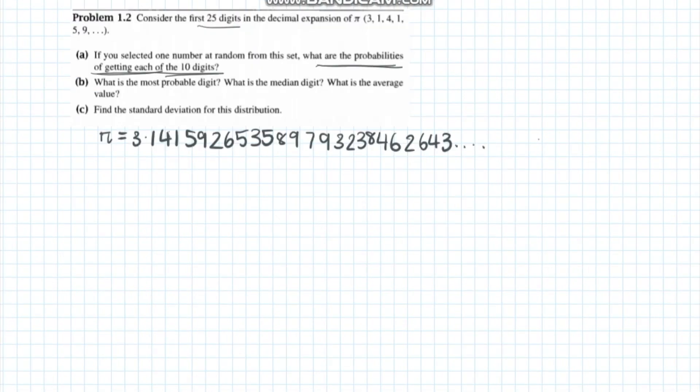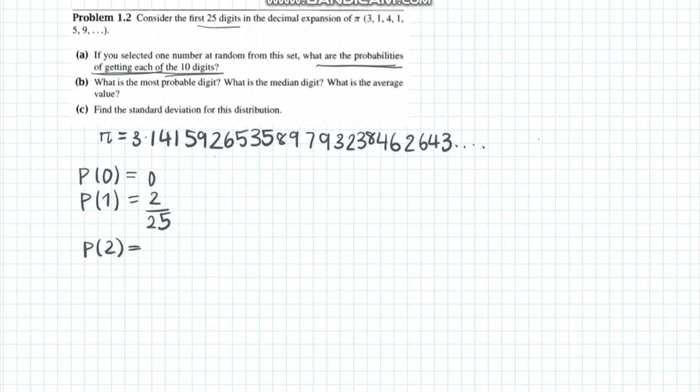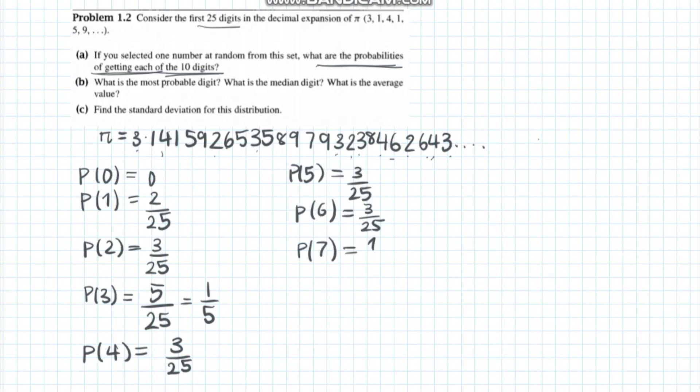Problem 1.2 asks us to consider the first 25 digits in the decimal expansion of pi, given up to 6 digits. Part a says: if you selected one number at random from this set, what are the probabilities of getting each of the quantities? We start with the probability of getting 0 and go up to 9.